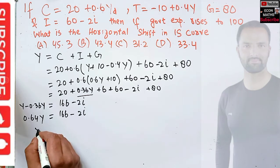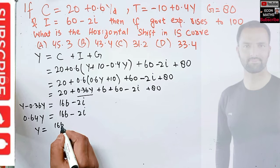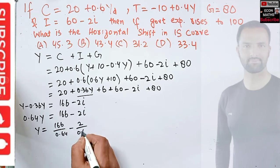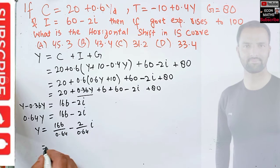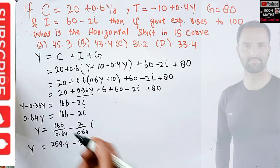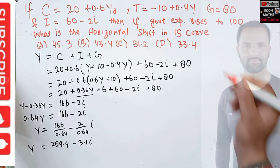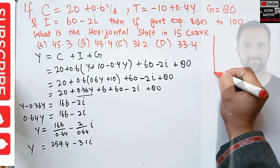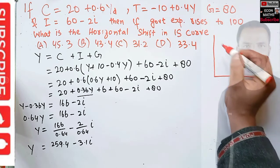We can write Y = 166/0.64 - 2/0.64 × i. If you calculate this, it comes out to be Y = 259.4 - 3.1i. This is our IS curve.